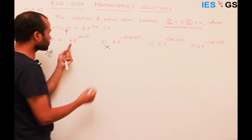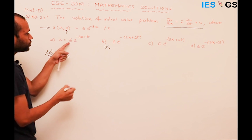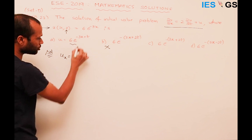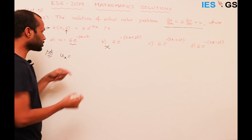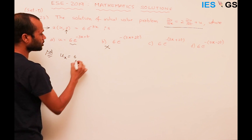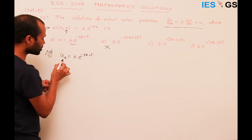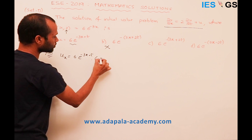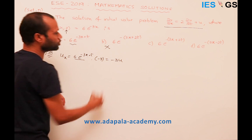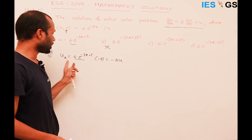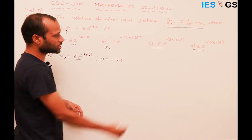Considering the candidates, what is ∂u/∂x? Since the function is of the form e^(f(x)), the derivative of e^x is e^x itself. So ∂u/∂x = 6 · e^(−3x + t) · (−3), which is simply −3u. Therefore ∂u/∂x = −3u.